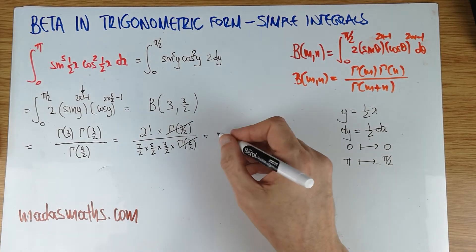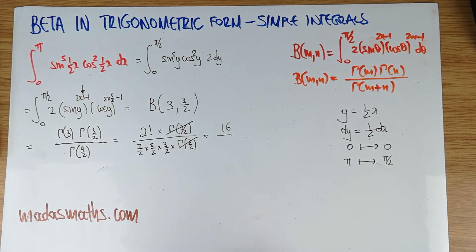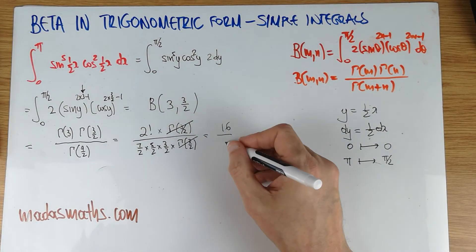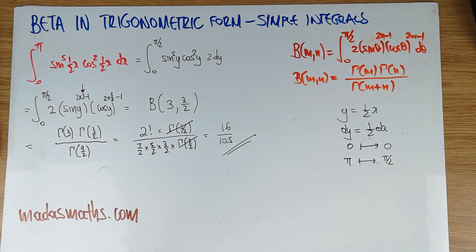And 2 factorial is simply 2. 4, 8, 16. And we have 7 times 5 times 3 is 35 times 3, 105. Okay, so that's the third integral. Nothing complicated.